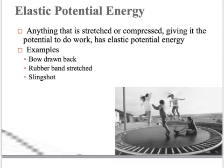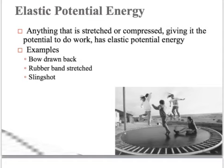Examples of elastic potential energy include a bow drawn back — as you pull that string back, you're stretching and bending the bow, and as you let go, it springs back to its original position, shooting the arrow forward. A rubber band stretched and a slingshot work on the same concept. A trampoline is another great example — the springs compress or stretch as you go down, gaining potential energy, and then spring you back up because they want to return to their original position.